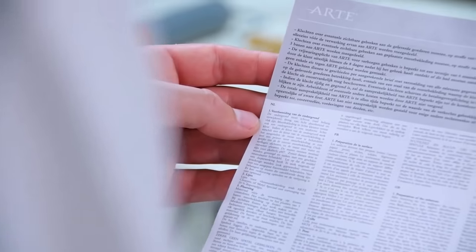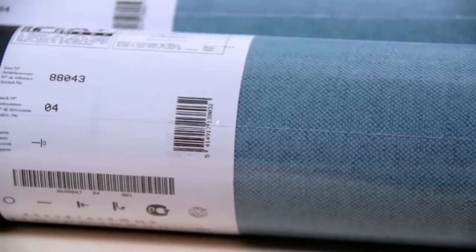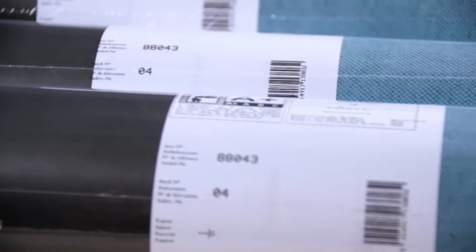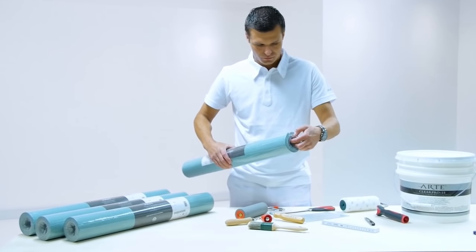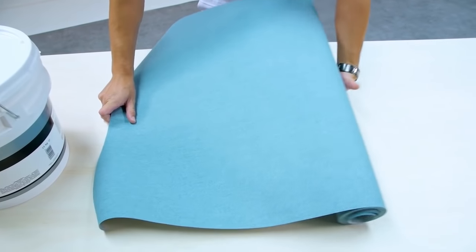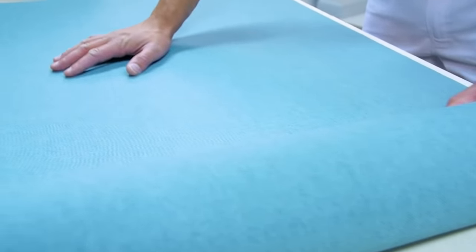Read the instructions that come with the wall covering. Check whether all the rolls have the same product reference and batch code so you can be sure that there will be no colour discrepancies. Unroll the wall covering and check whether everything is as it should be.